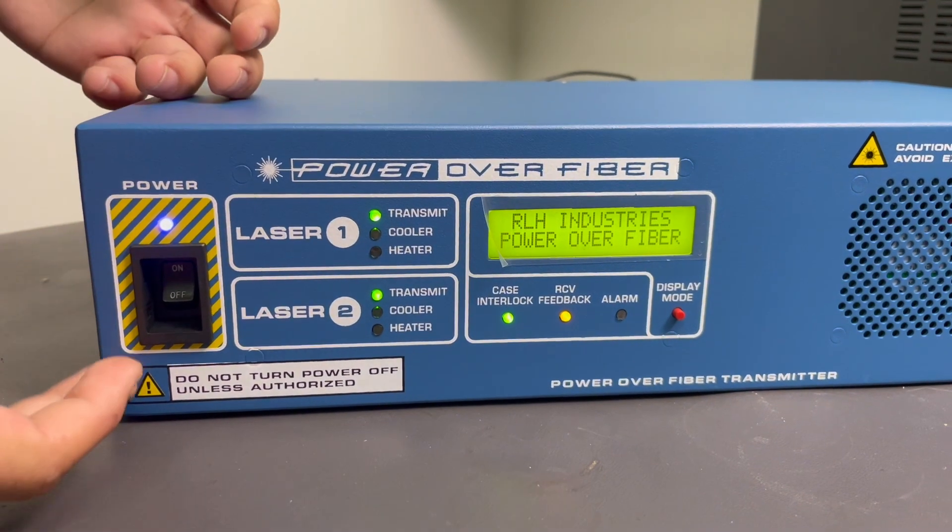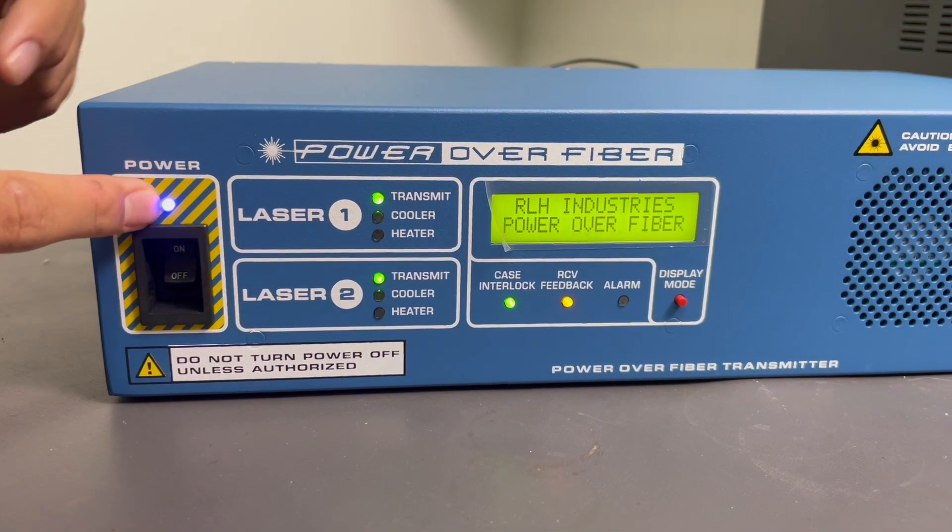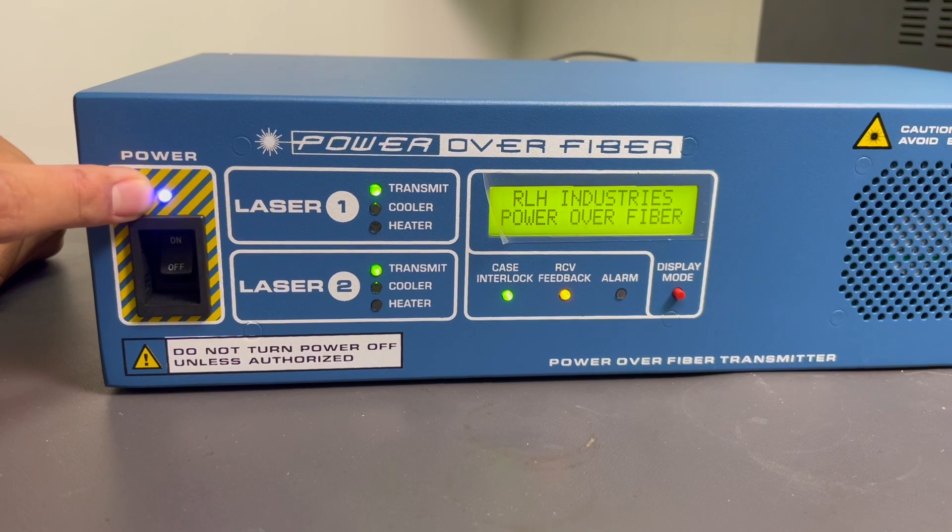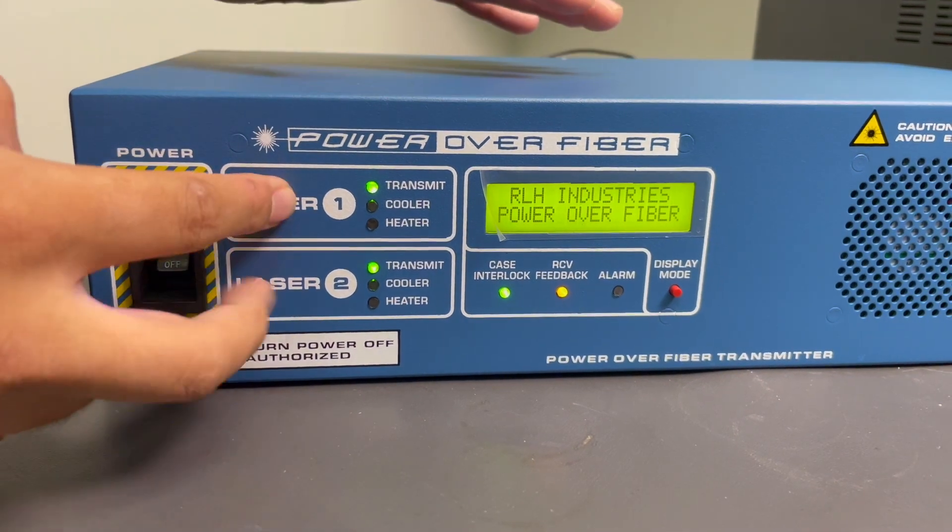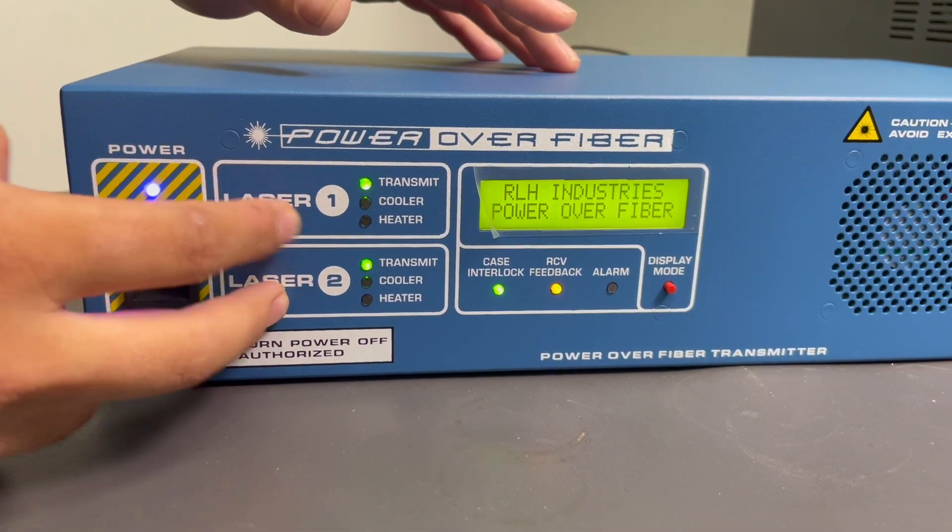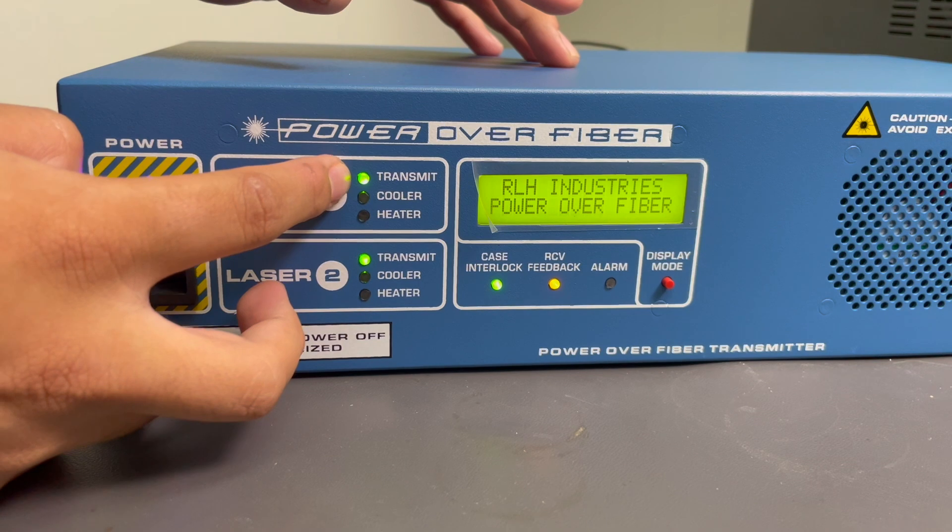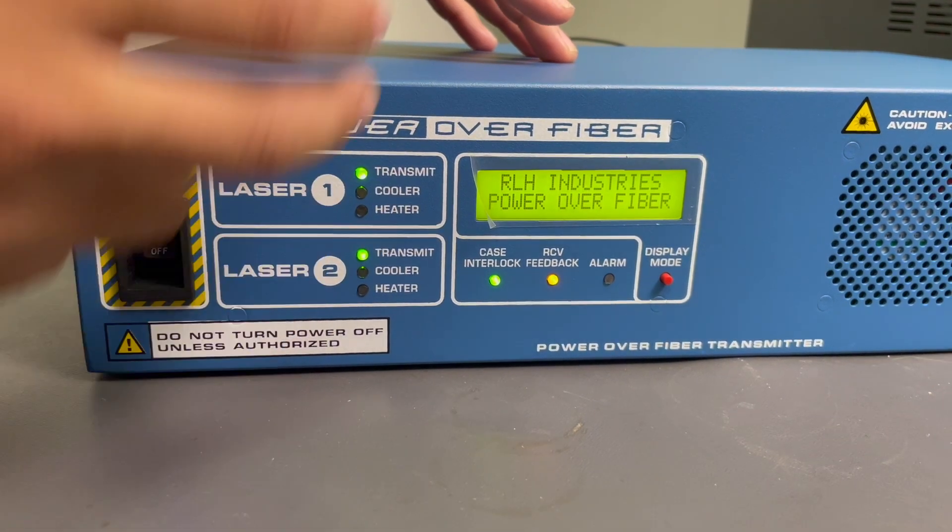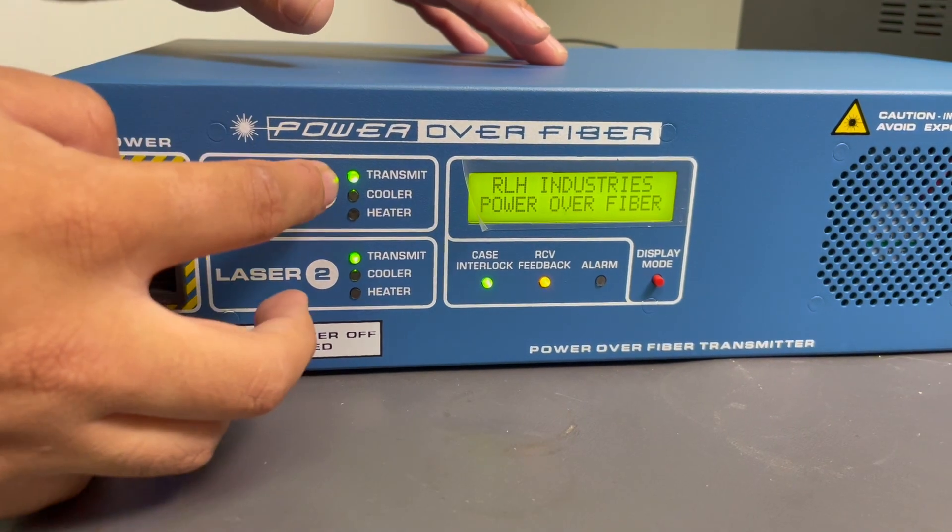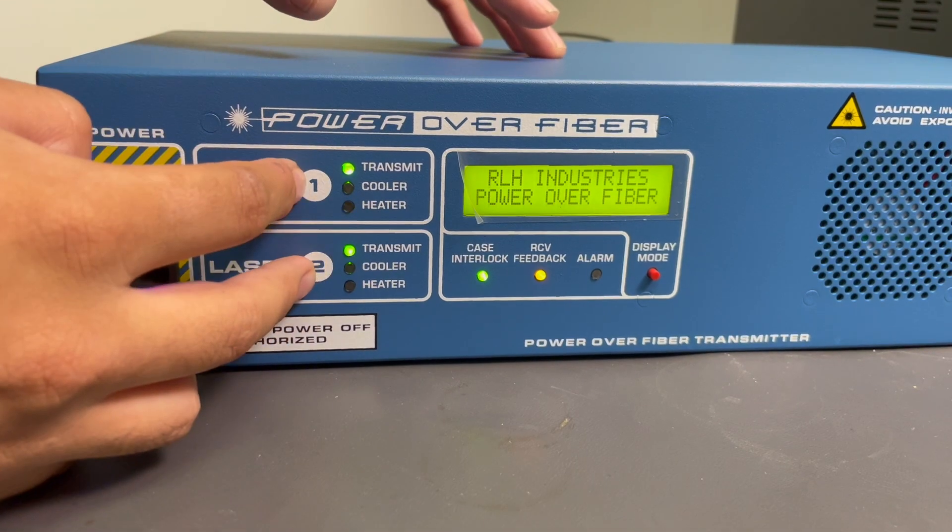Over here, as you can see, the on and off switch, and you can see the power LED is on, which is blue, and in this system we have two lasers built in. So right now the LED is indicating on the transmit side as it is transmitting to our receiver side and LED indicators showing transmit on laser one and two.